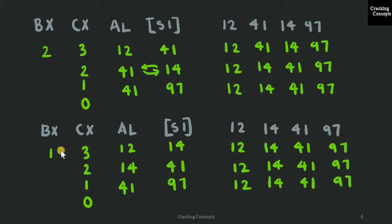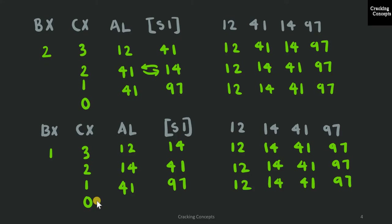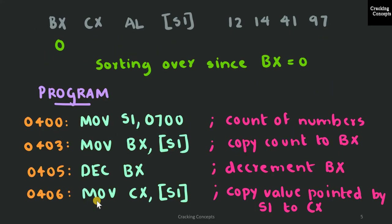We decrement BX by 1 and reload CX to 3. Comparing 12 and 14: 12 is lesser, no swapping; CX becomes 2. Taking 14 and 41: 14 is lesser, no swapping; CX becomes 1. Taking 41 and 97: 41 is lesser, no swapping; CX is now 0. We decrement BX, which becomes 0. Since BX is 0, the sorting is complete.